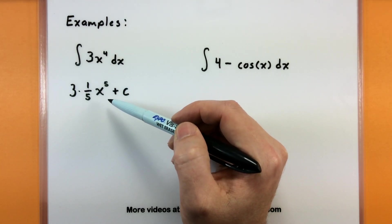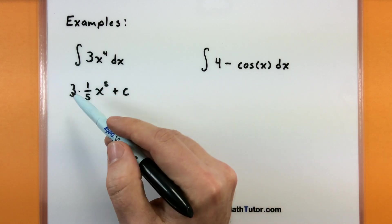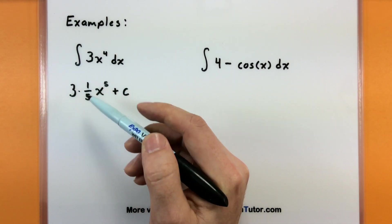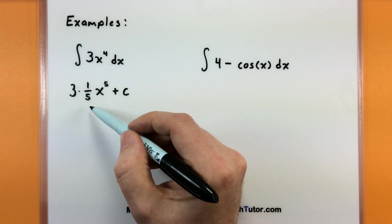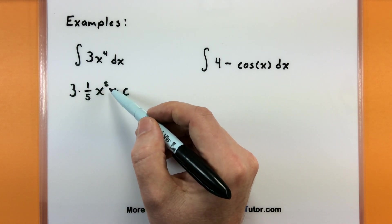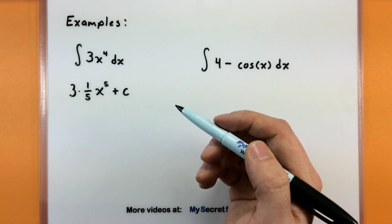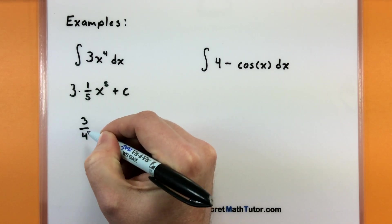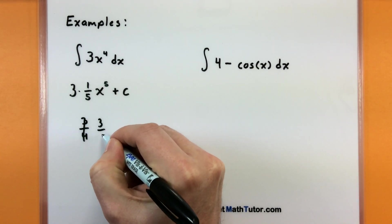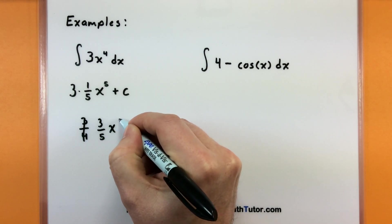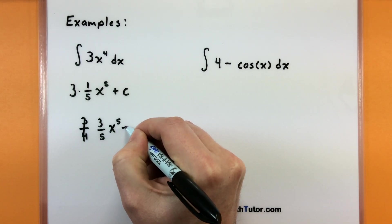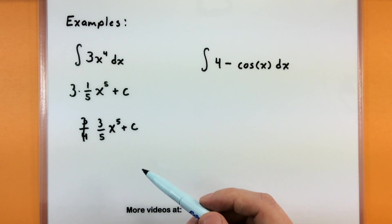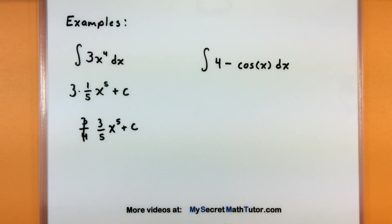If I take the derivative of this, constants out front are unaffected, I bring down the power — it cancels out the five — and the power is reduced by one, turning it into four. Sure enough, our anti-derivative is three-fifths x to the fifth power plus some constant, and this is what we have for the indefinite integral.